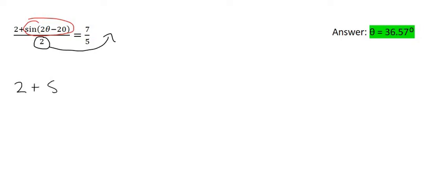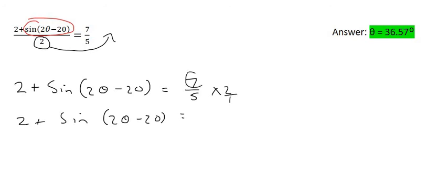And so you're going to end up with 2 plus sin of 2 theta minus 20 equals to 7 over 5 times 2. And 7 over 5 times 2, well that's going to be 7 over 5 times by 2 over 1. And so we multiply top times top, which is going to be 14, and bottom times bottom, which is 5.